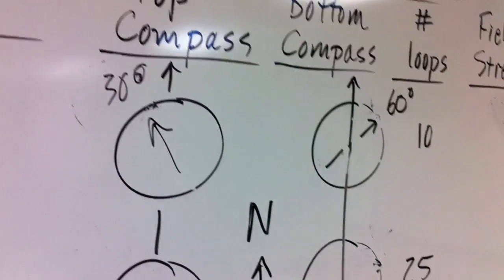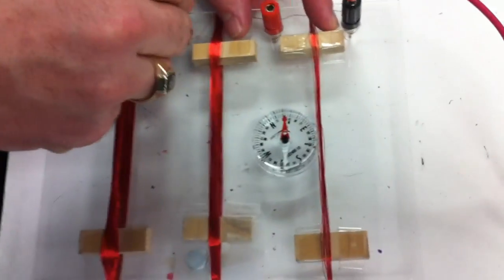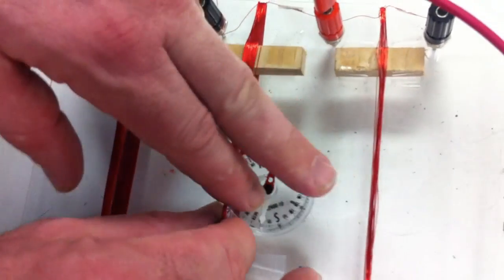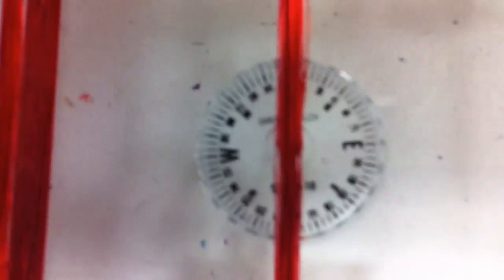Now we're going to go to the 25 turns of wire. So I'm going to switch the leads from my power supply and do the same thing. We're going to do it underneath. So it's going to deflect the same direction to the east when it's inside the loop of wire. Here we go.